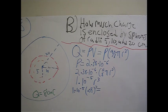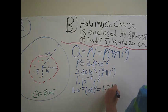Substituting in 0.05 for the 5 centimeters, we have 1 times 10⁻⁵ times 0.05³, which gives us a value of 1.25 nanocoulombs.